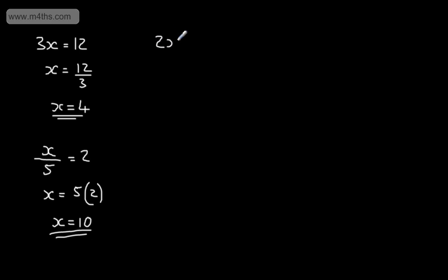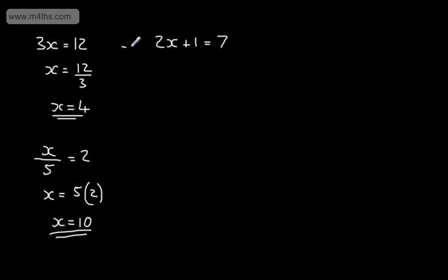Let's look at one that's slightly harder. Let's say we've got 2x plus 1 is equal to 7. So x started off, we multiplied it by 2, we added 1 and got 7. What we're going to do is undo this. The technique I'm going to use will seem quite a lot of work to begin with, but this will work for all equations, especially when we have the unknown on both sides. The first thing I'm going to do is subtract 1 from each side.